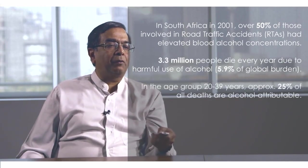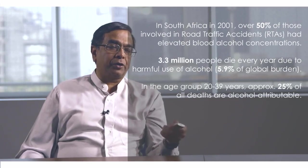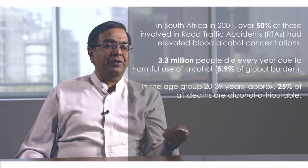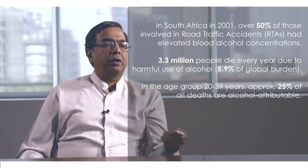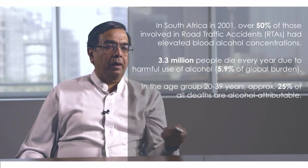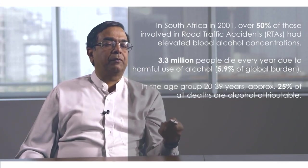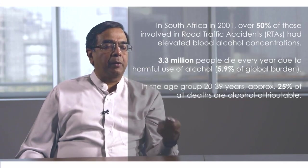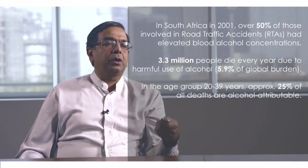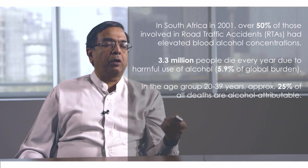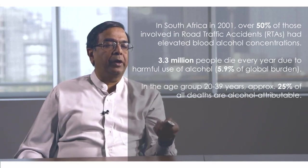In the age group of 20 to 39 years, about 25% of all deaths are attributable to alcohol — not only because of road traffic accidents, but because of other harmful effects of alcohol as well. Alcohol is the cause of cirrhosis, a liver problem involving fibrosis, as well as cancers attributable to alcohol, particularly gastrointestinal cancers. All of these are growing problems.